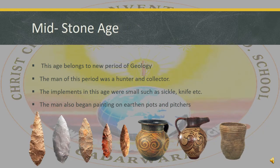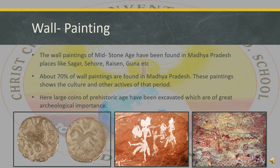Moving further, let's understand the second subcategory of Stone Age, i.e., Mid-Stone Age. This age belongs to a new period of geology, and men of this period were hunters and collectors. The implements in this age were small, such as sickles, knives, etc. Men also began painting on earthen pots and pitchers. You can see in this image how beautifully men used to paint the pots and other things. As far as painted caves are concerned, Madhya Pradesh is very rich. Wall paintings found in Madhya Pradesh are of global importance, and the wall paintings of Mid-Stone Age have been found there.